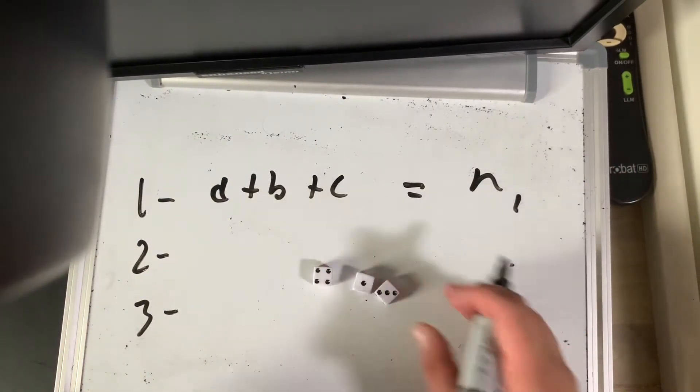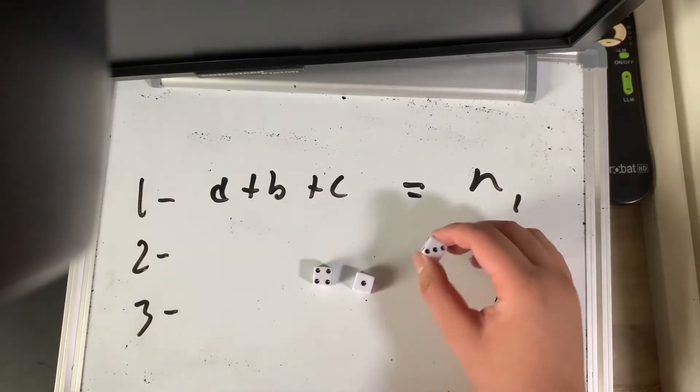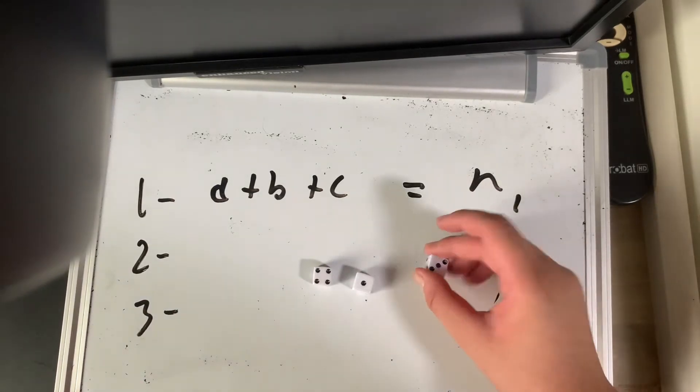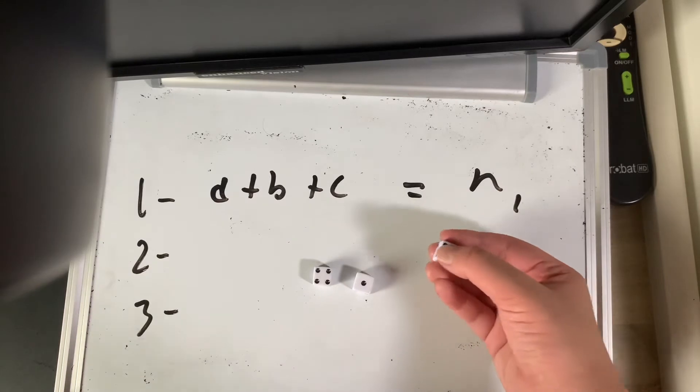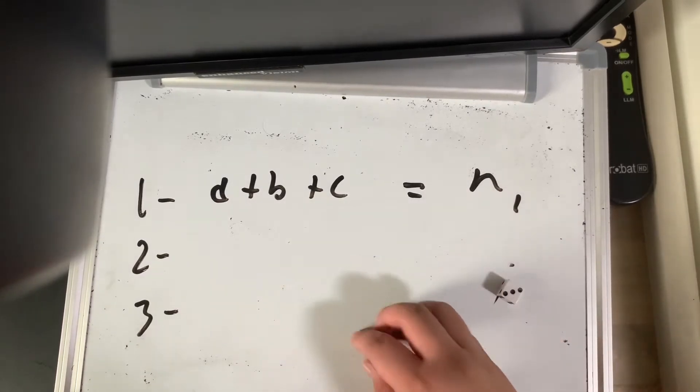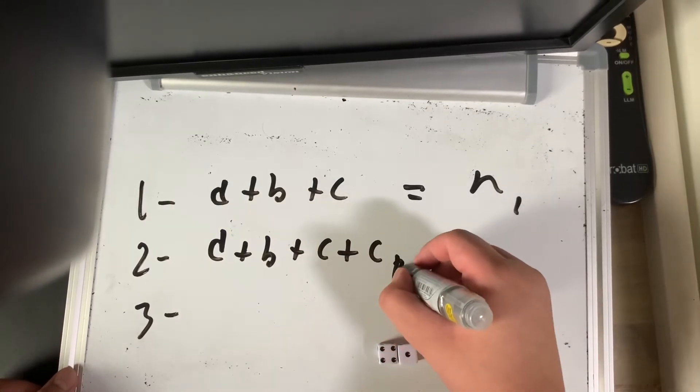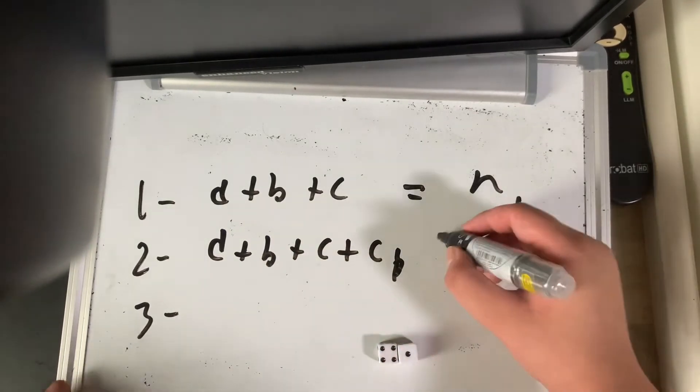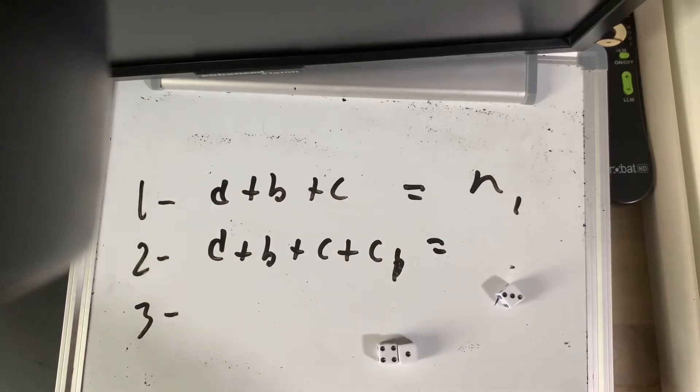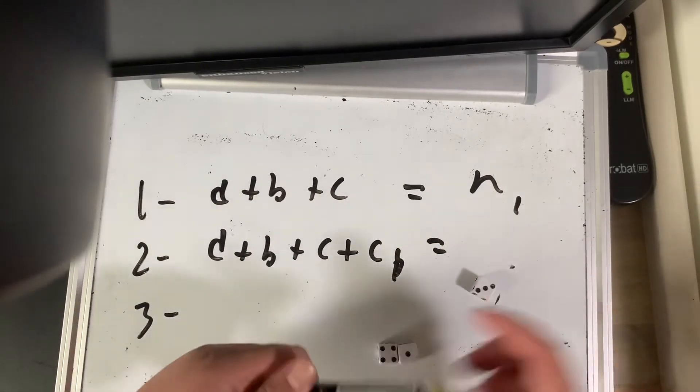Next thing we're going to do, I took this one, I took C, it doesn't really matter which dice it is, but I found the bottom one. The bottom one is 4. So A plus B plus C plus the bottom number of C, the bottom number of dice C. Now what does this mean?